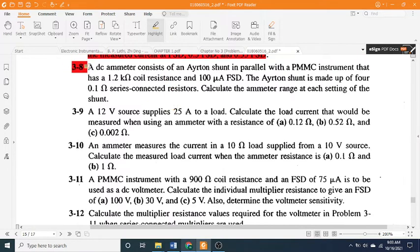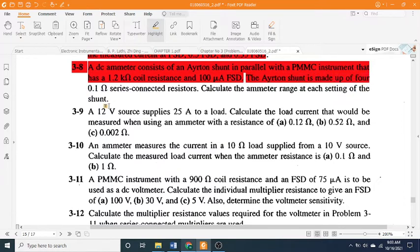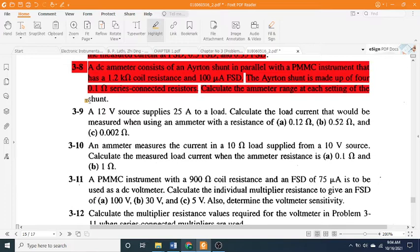3-8: A DC ammeter consists of an Ayrton shunt in parallel with a PMMC instrument that has a 1.2 kΩ coil resistance and 100 μA FSD. The Ayrton shunt is made up of four 0.1 Ω series-connected resistors. Calculate the ammeter range at each setting of the shunt.